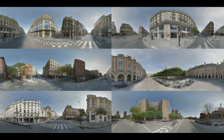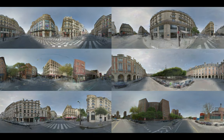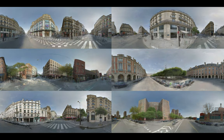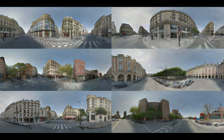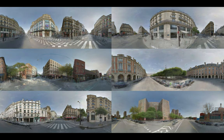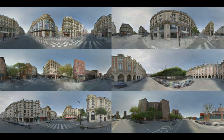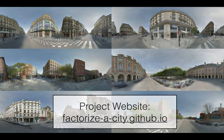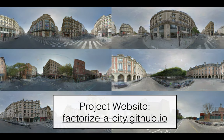Finally, we show examples where we can take test panoramas from a different city like Paris, and generate a progression of the sun through the sky, which captures moving shadows. Please visit our website, and we invite you to our full talk to see more.